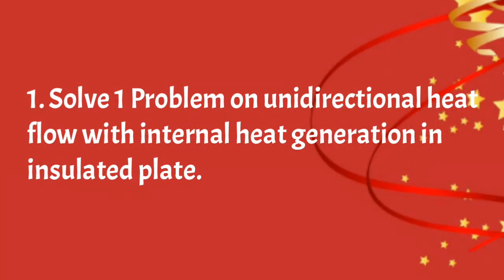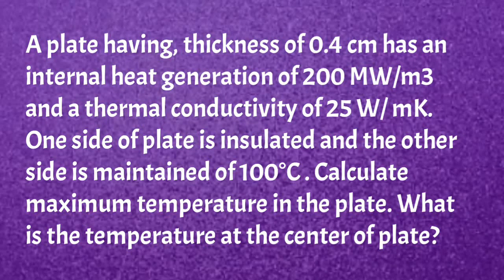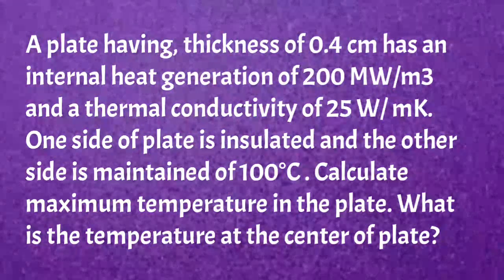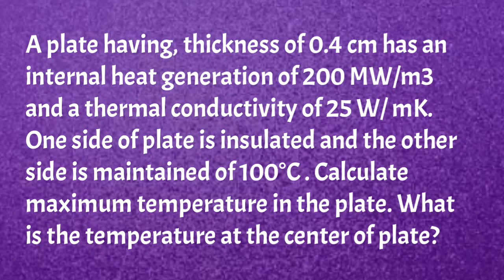We will solve a problem on unidirectional heat flow with internal heat generation in an insulated plate. A plate having thickness of 0.4 cm has an internal heat generation of 200 MW per meter cube and a thermal conductivity of 25 W per meter Kelvin. One side of the plate is insulated and the other side is maintained at 100 degree Celsius. We need to calculate the maximum temperature in the plate and the temperature at the center of the plate.